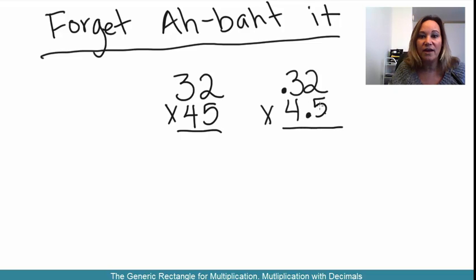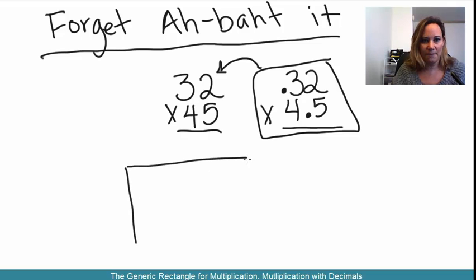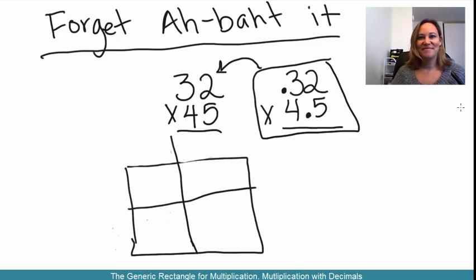So in this method, the 'forget about it', you actually just treat this problem as if it had no decimals and then you put them in later. So watch this, this is where it gets pretty cool. Okay, so actually today I want to use the generic rectangle because that will help illustrate our point more than anything else.